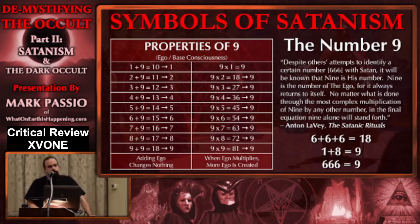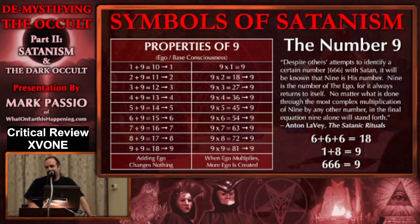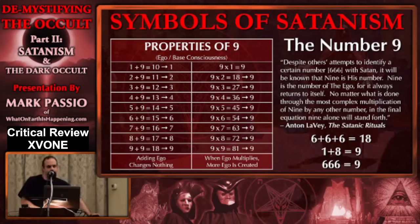So what does this have to do with the other number LaVey mentions? He says we don't want to identify with 666, the so-called number of the beast. But in gematria, six plus six plus six is 18, and one plus eight is nine. That means in gematria, 666 is equivalent numerologically to nine. That's why it is Satan's number — 666 equals nine. It's an encoded mathematical truth.